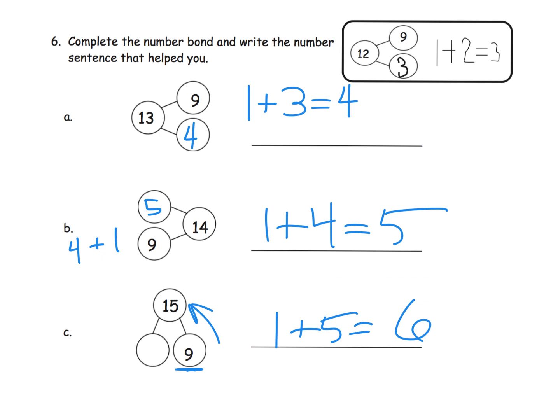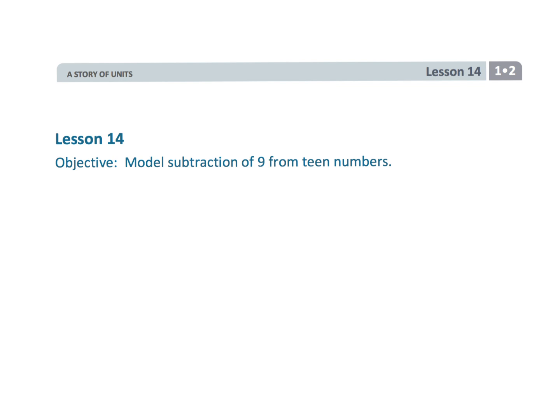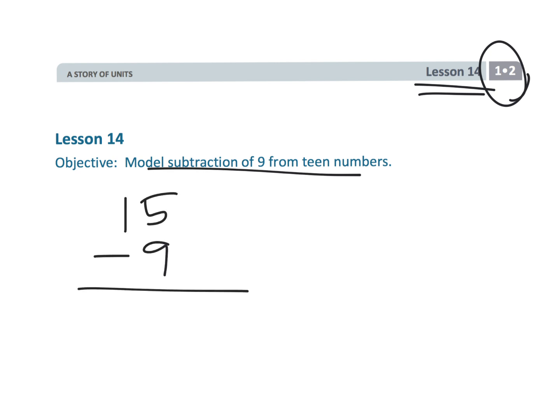That wraps up first grade module 2 lesson 14 — subtracting 9 from teen numbers using the count-up method. Start with 9, add 1 to get 10, then add 5 more to get 15, so 1 plus 5 is 6. That's essentially where we're going to get to.